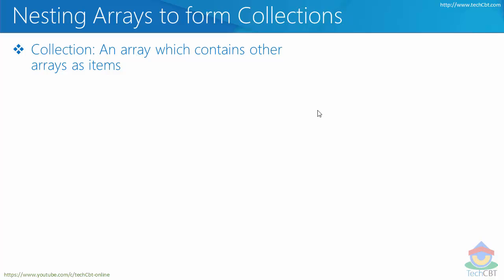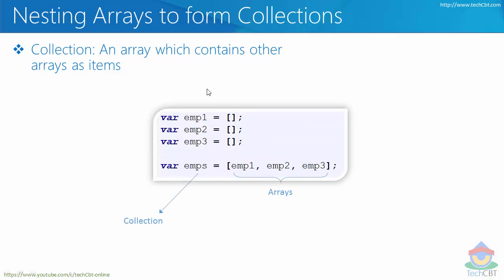Whenever we have those nested arrays in the form of associated arrays, they together can form a particular collection. So imagine having three arrays — currently empty — but if we consider each of those arrays as associated arrays, and then create another new array with all of those as elements, that new array is assigned to EMPS. That is what we call a collection — an array containing a set of multiple associated arrays.